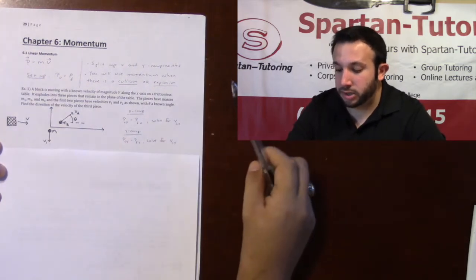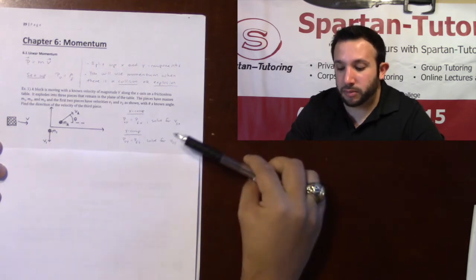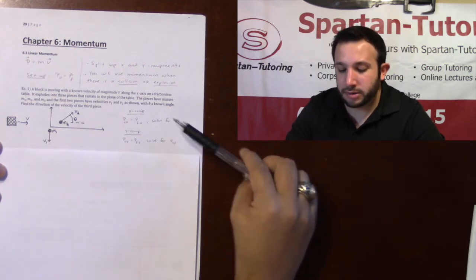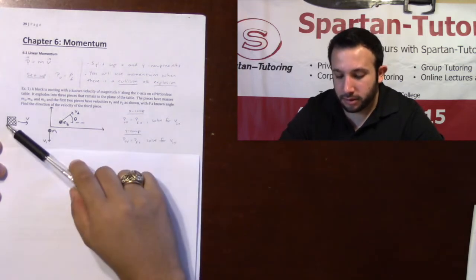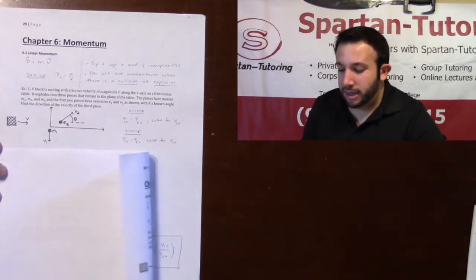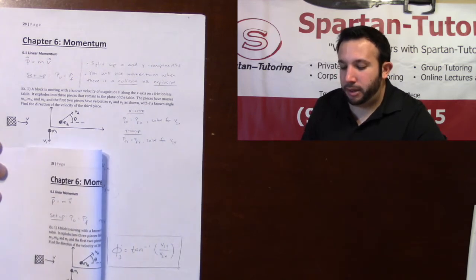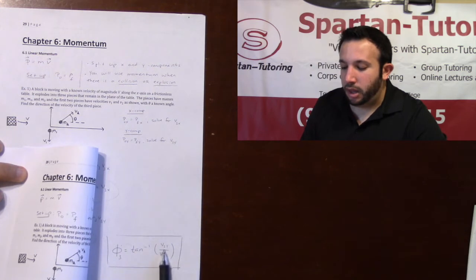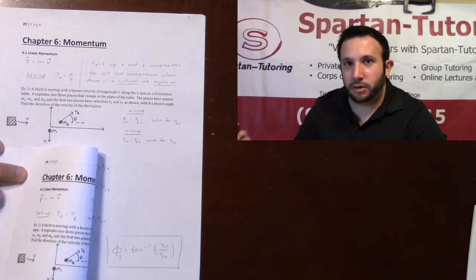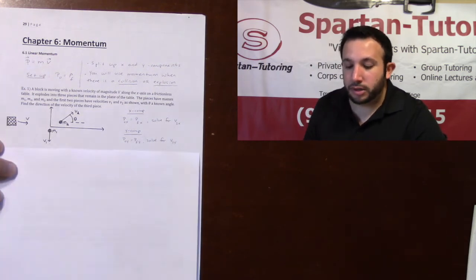Here's going to be my strategy: find the x component of the velocity of my third piece, find the y component of the velocity of my third piece, and then to find your angle it's just going to be the arc tangent of your y over your x, of your opposite over your adjacent.